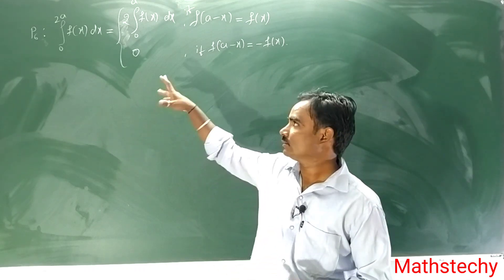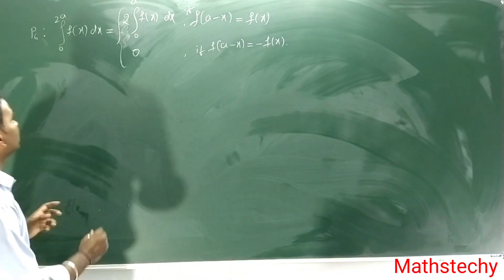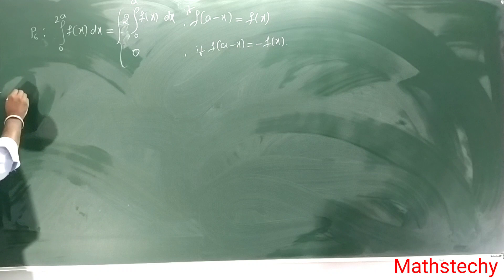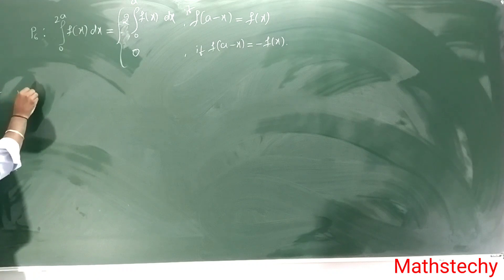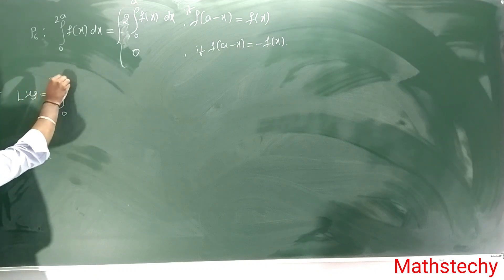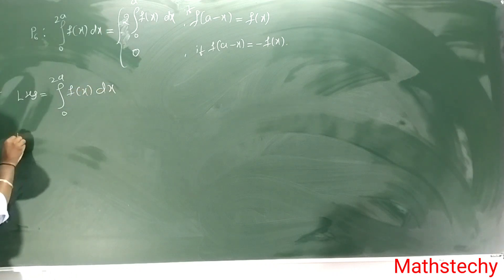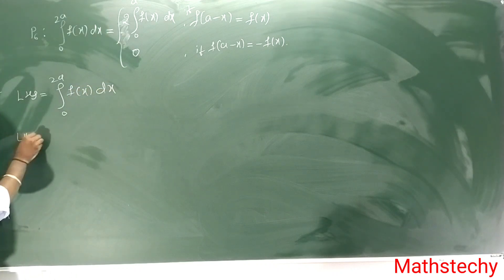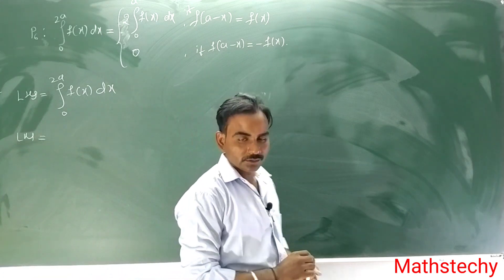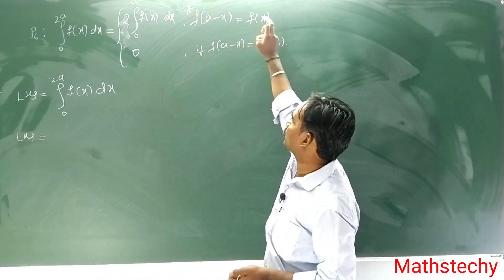Let's solve the problem now. Property — prove that. Left hand side, let's write: 0 to 2a, f of x dx. Let's write f of a minus x equal to f of x.